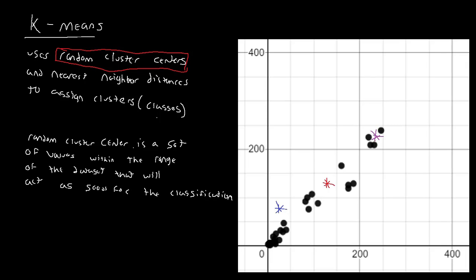So the next part we have to interpret is this idea of nearest neighbor distances. All nearest neighbor distances is saying is: given this cluster center and given this point right here, which cluster center am I closest to? Am I closest to this one? Am I closest to this one? Or am I closest to this one? Well, visually we can tell the answer is going to be this purple one right here.